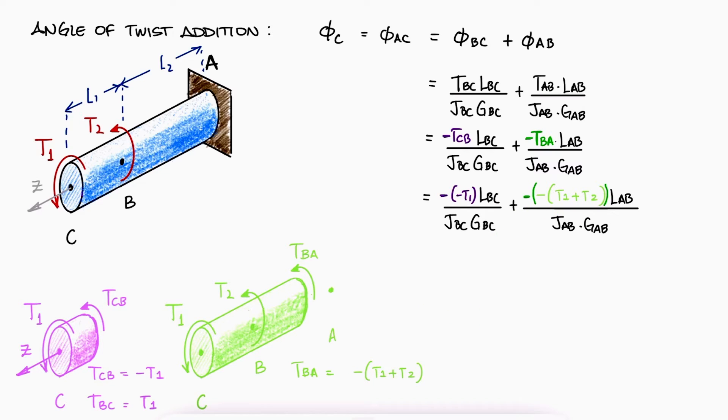If the radius is the same for both sections, the polar second moment of area J will be the same, and if the rod is made out of the same material, the shearing modulus values will also be the same.